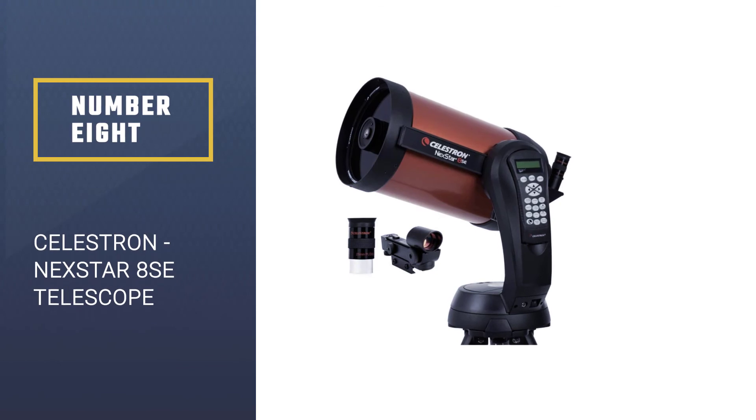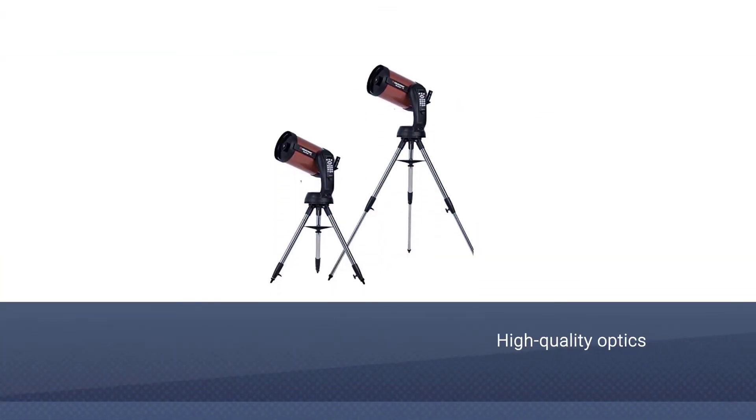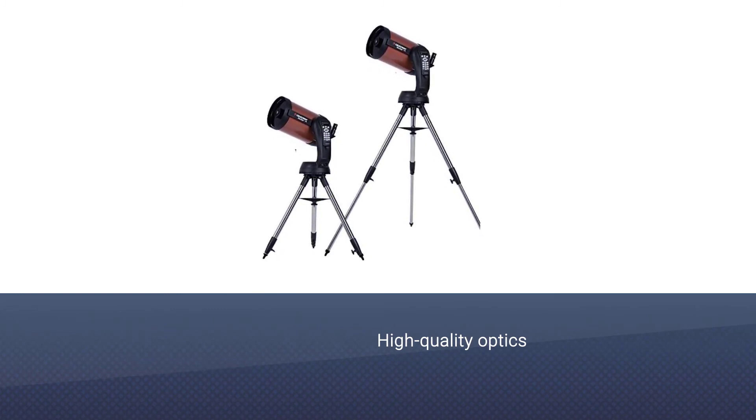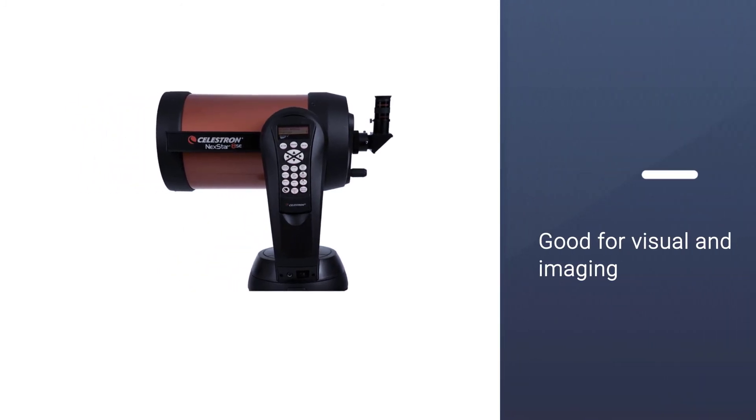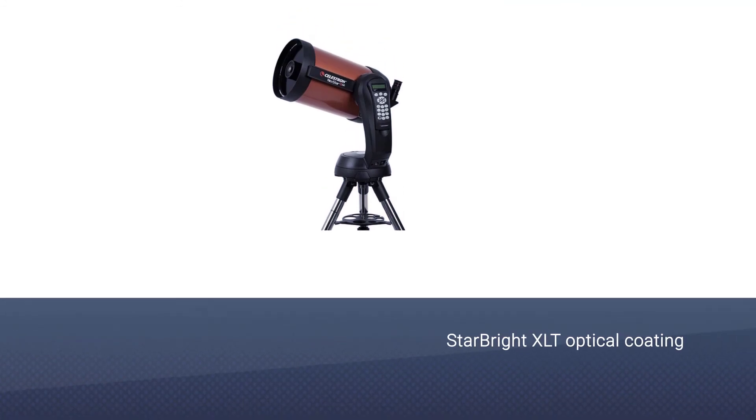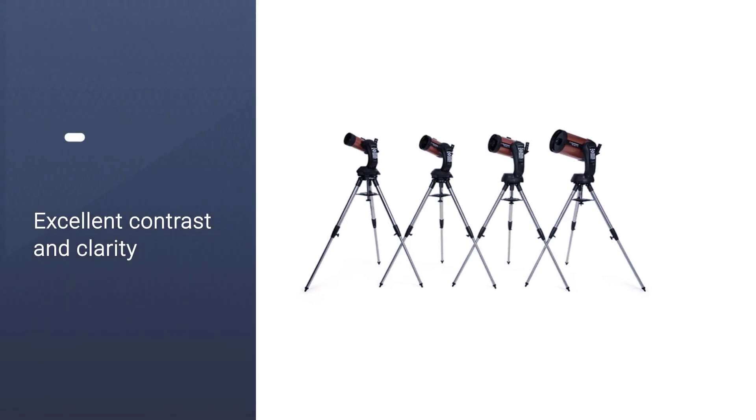Number eight: Celestron NexStar 8 SE Telescope. Celestron's NexStar 8 SE certainly fits into this category, earning itself the title of the world's most beloved telescope. Featuring a StarBright XLT optical coating, spectacular views of the planets and moon can be had with excellent contrast and clarity. Jupiter and its moons along with Saturn and its rings are particularly breathtaking through the optical system.